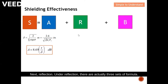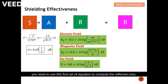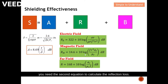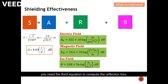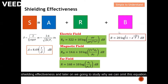Next, reflection. Under reflection, there are actually three sets of formulas. When the source is dominated by electric field under near field, you need to use the first set of equations to compute the reflection loss. When your source is dominated by magnetic field, you need the second equation to calculate the reflection loss. Last but not least, when your field is considered far field, you need the third equation to compute the reflection loss. Next, multiple reflection loss — I have introduced you this formula. Multiple reflection loss actually causes a degradation on shielding effectiveness, and later on we're going to study why we can omit this equation.